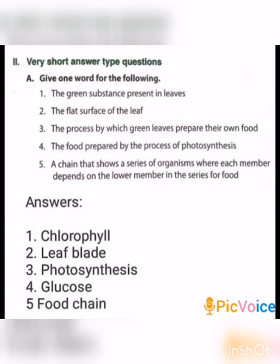Fourth one: The food prepared by the process of Photosynthesis. That is Glucose. Fifth one: The chain that shows a series of organisms where each member depends on the lower member in the series for food. That is Food chain. Answer the following questions will be discussed in the next class. Thank you.